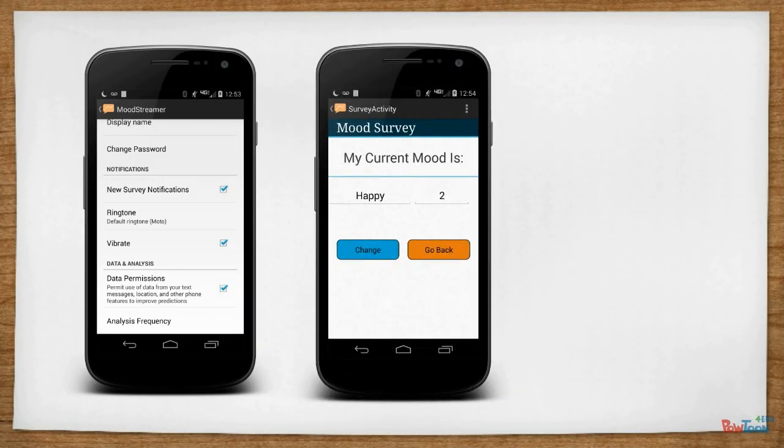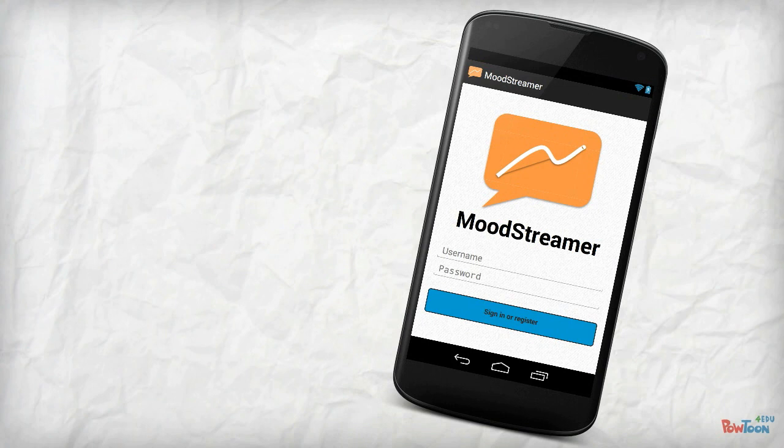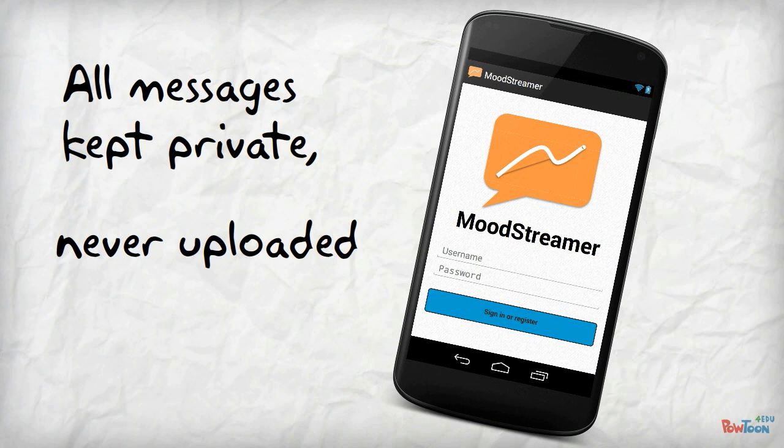After filling out only a few short surveys, the app automatically infers her mood and she never has to enter her data again. All the data processing happens on her phone, so it's as secure as her text messages and no one sees her data who she doesn't show it to.